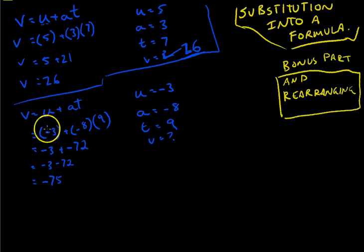So again, those brackets are really handy. You could actually type that entire line into a calculator and get the answer. We know that V equals negative 75, given that U equals negative 3, A equals negative 8, and T equals 9.